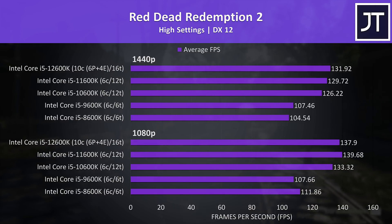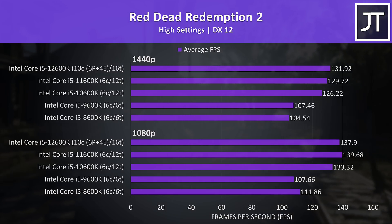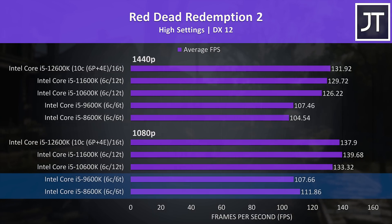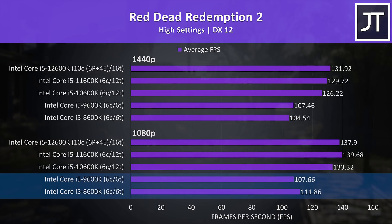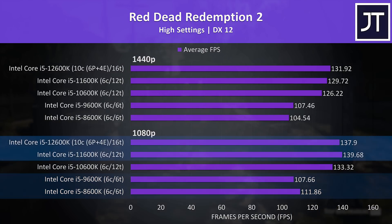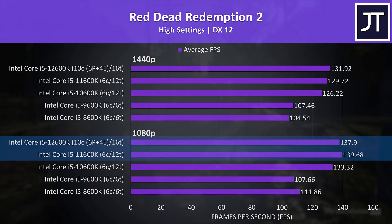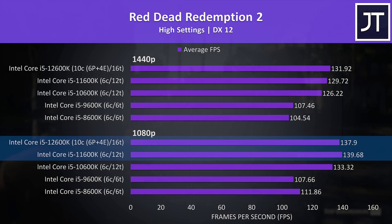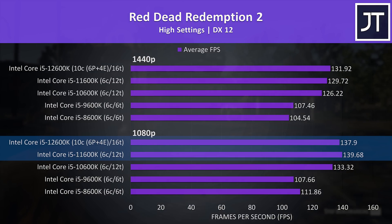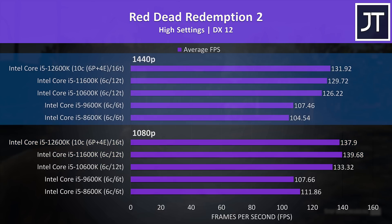Red Dead Redemption 2 was also tested with the game's benchmark. At 1080p the 9th gen i5 was doing worse than 8th gen, and 11th gen was slightly ahead of 12th gen — the only time this happened in all 10 games tested. This was only at 1080p though, because at 1440p the results look as expected, with newer processors performing better.